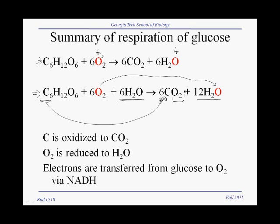And then these 12 oxygen atoms — half of them come from the six oxygen atoms in glucose, and half of them come from the six oxygen atoms in six molecules of water. So that leaves us with the hydrogens. There are 12 hydrogens here, another 12 hydrogens here, and these 12 hydrogens become the 24 hydrogens in the 12 water molecules.